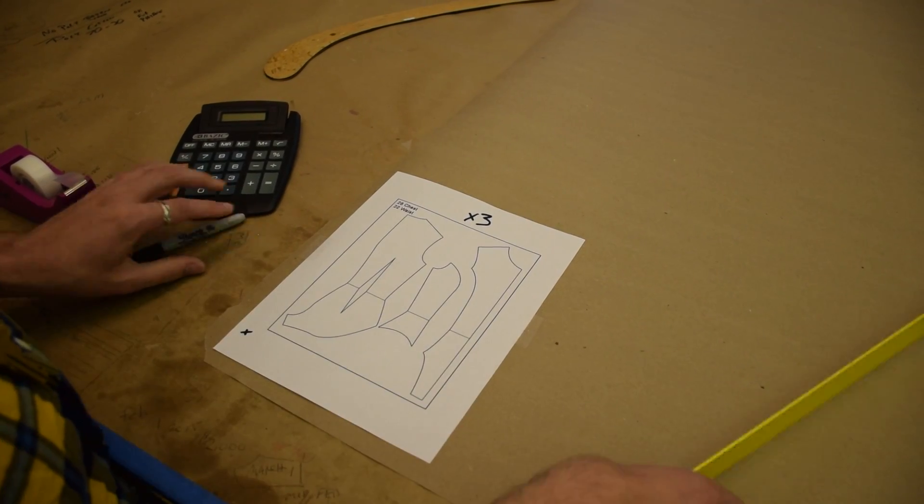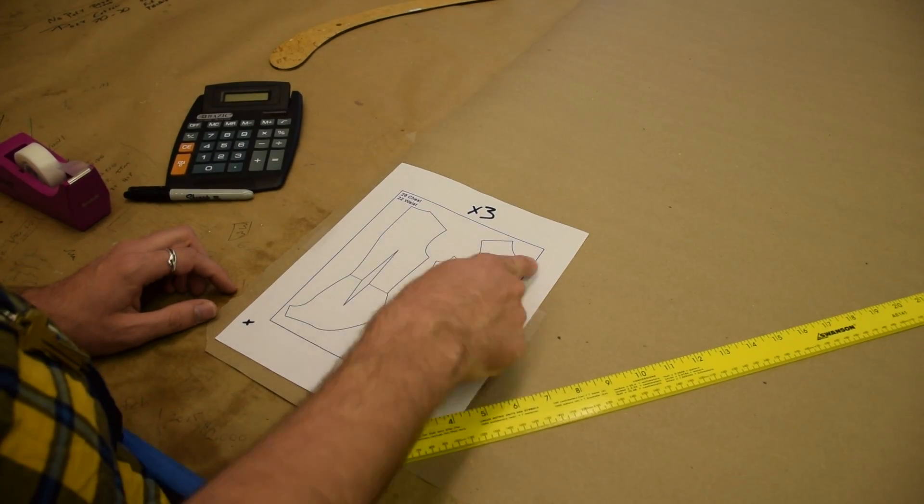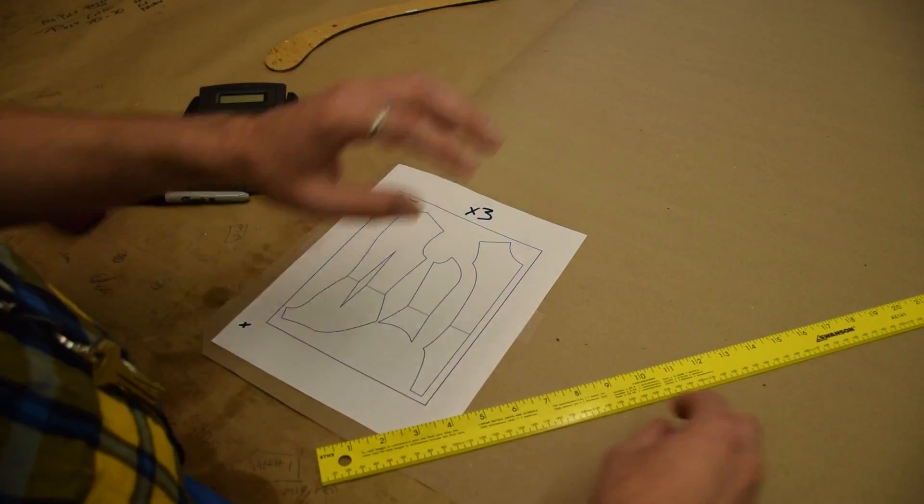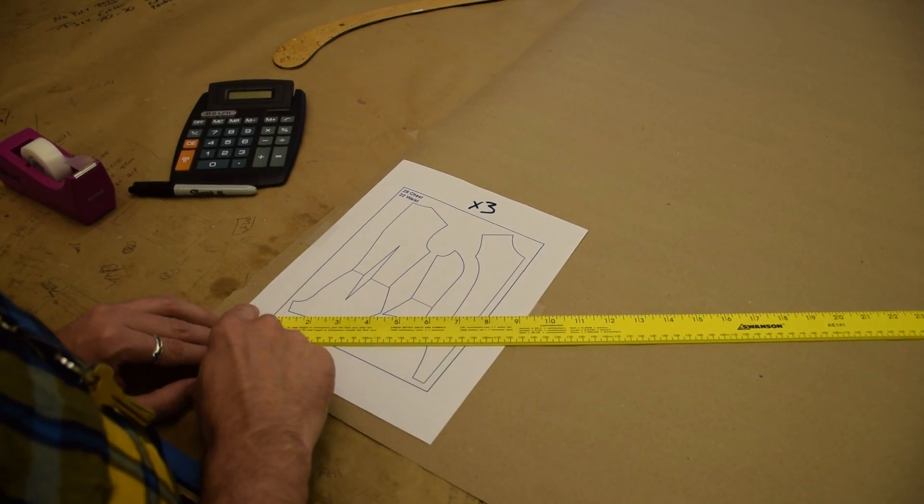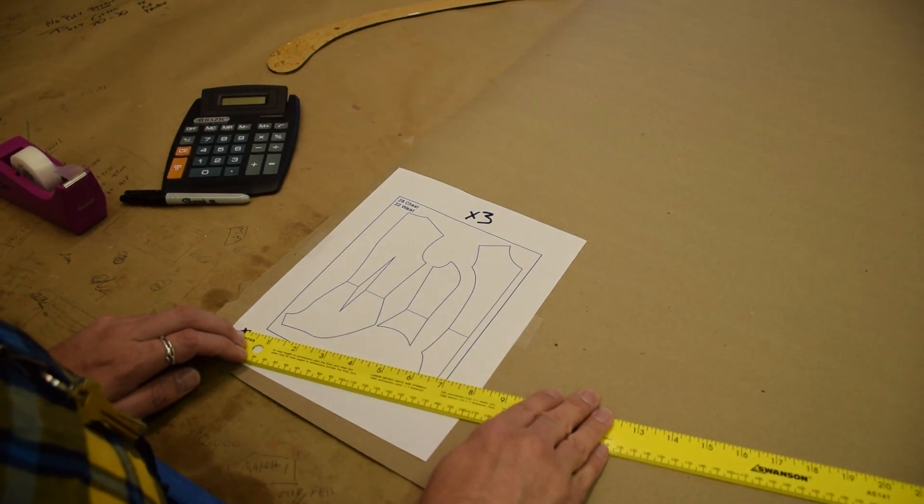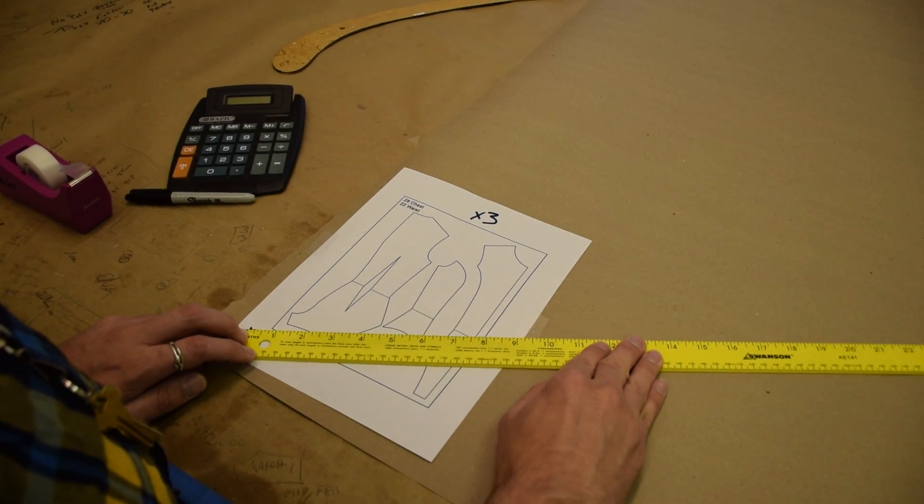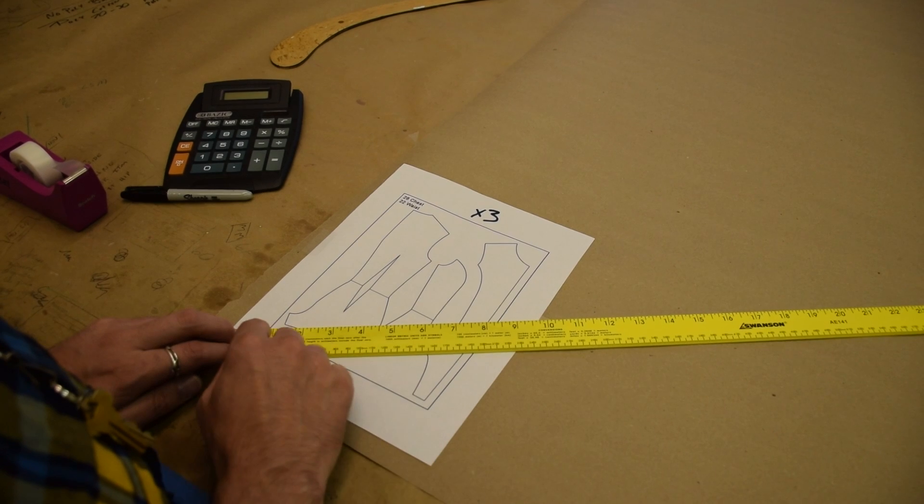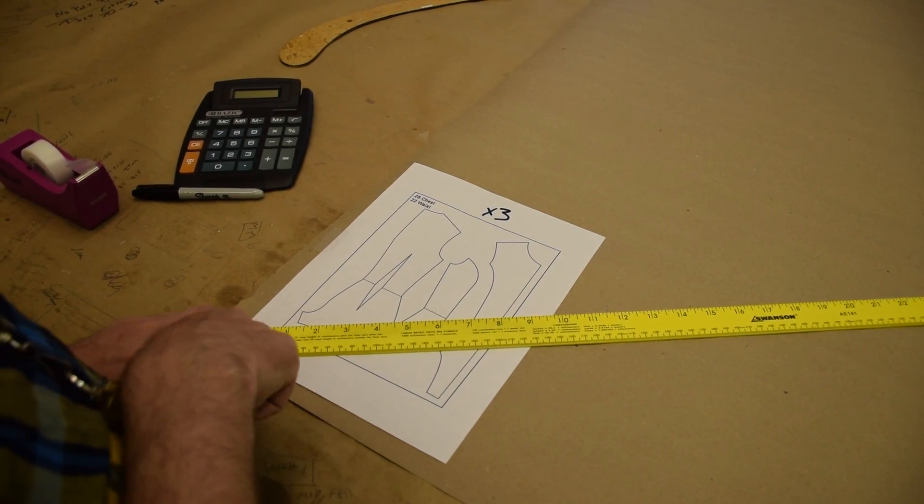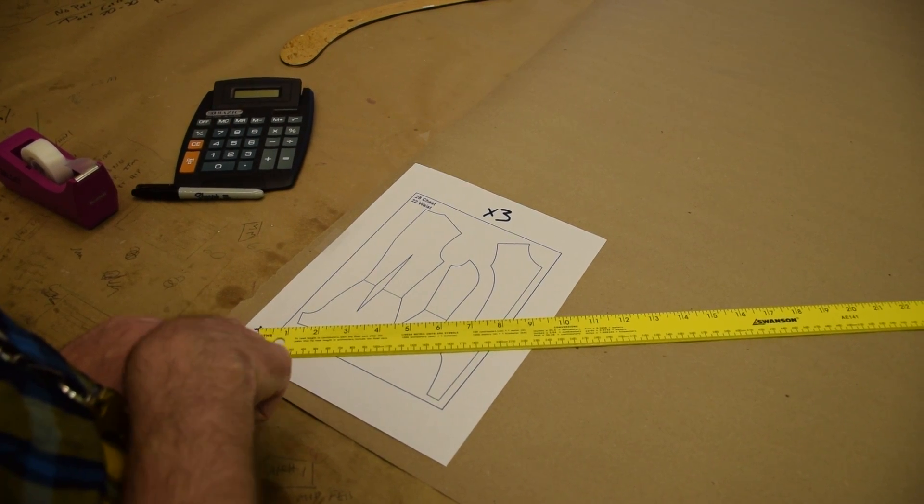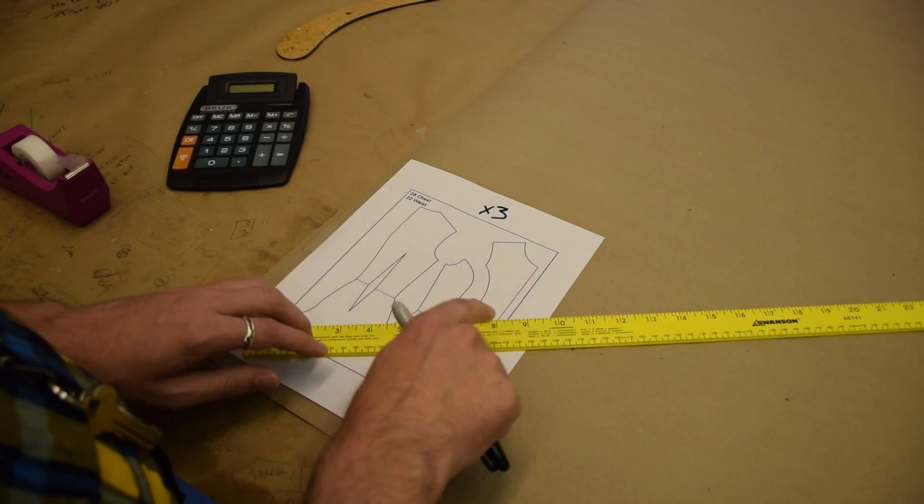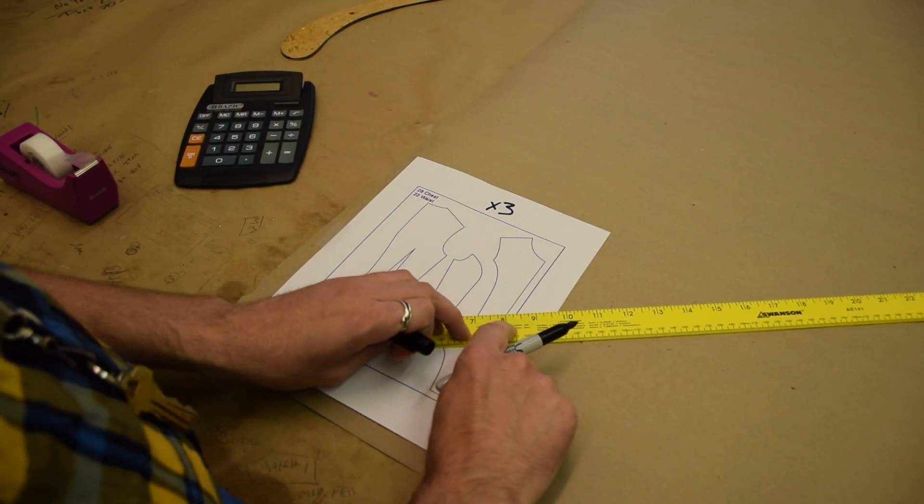So now, using a yardstick, we're going to start plotting different points of our base out onto the pattern paper. So putting the zero of my ruler on X, let's start with the front pattern piece. I'm going to just pivot my ruler until a number that's easily multiplied by three shows up. So the left of my ruler is on our X, and eight is hitting the front of the leotard front.